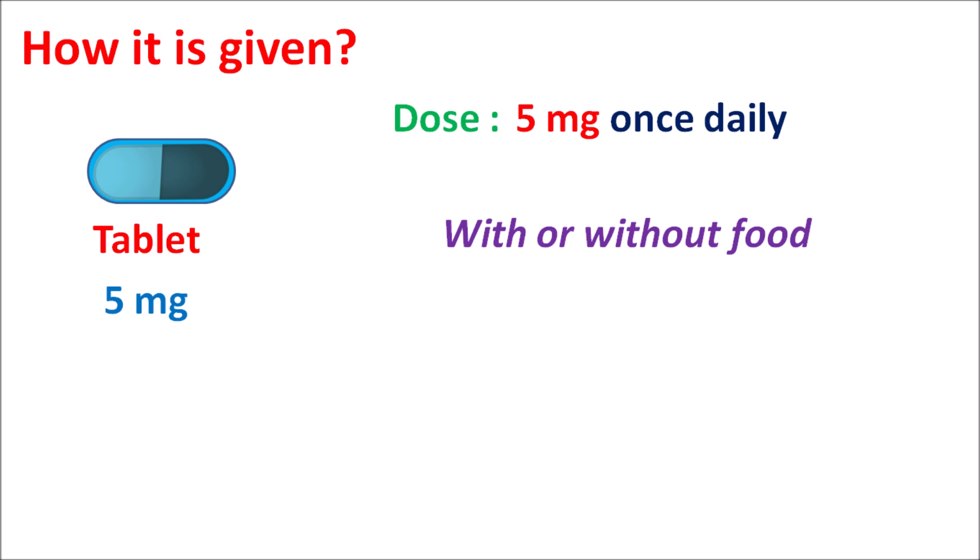So linagliptin indirectly increases insulin secretion — that's why hypoglycemia is one of the important precautions that should be considered with this drug, which is more important when combined with other anti-diabetic agents that also increase insulin secretion. For instance, sulfonylureas increase insulin secretion, so when given with linagliptin, the dose of the sulfonylurea should be reduced to prevent severe hypoglycemia. Pancreatitis is another important side effect commonly observed with DPP4 inhibitors.